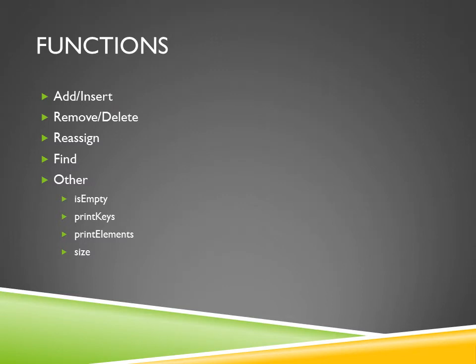Like many other data structures, the dictionary data structure has functions like add and remove elements. The add function allows the user to add new key-element pairs to the collection. These pairs do need to be sorted using the key, and the delete function allows the user to get rid of the key as well as its associated element.